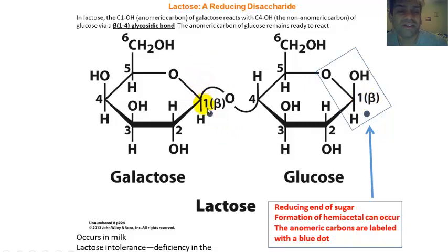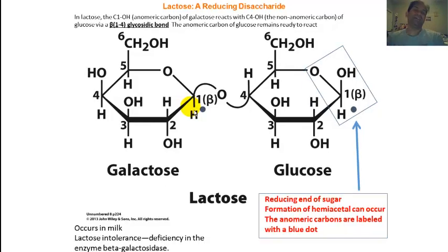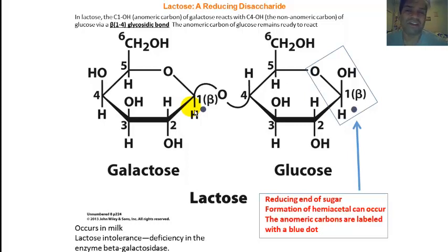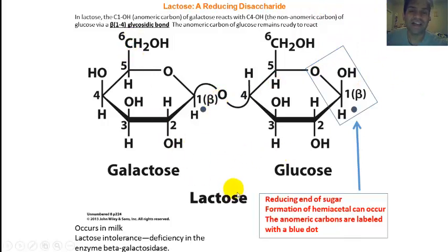When we join a monosaccharide with another monosaccharide, we have to designate the glycosidic bond. If the anomeric carbon makes that glycosidic bond, we have to determine whether it's the beta or alpha anomer. This is the basis for determining whether a sugar is reducing or not. Galactose and glucose joined together by a beta-1,4 glycosidic bond is known as lactose — beta because it's the beta anomer of galactose that forms a glycosidic bond with carbon number 4 of glucose.